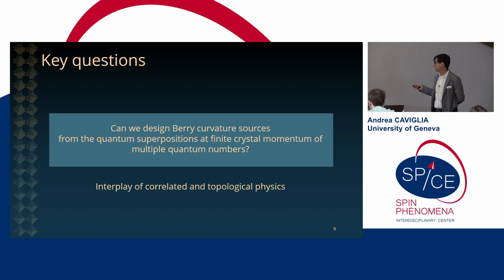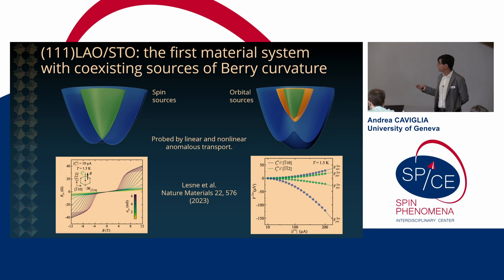And we think we found a system that has these properties which is the interface between lanthanum aluminate and strontium titanate synthesized along the 1-1-1 direction. So we are all familiar with the work of Hwang and his seminal discovery of a two-dimensional electron gas at the 0-0-1 surface of a strontium titanate interface with lanthanum aluminate. Here we have been looking at a system with a slightly different crystalline symmetry so along the 1-1-1 direction. And here we find both spin sources of Berry curvature and orbital sources that coexist. And we can independently probe the two sources by either looking at linear transport in magnetic field or non-linear transport at zero magnetic field. And that's what I will show you today.